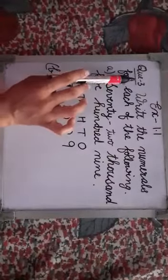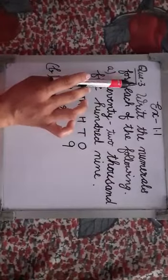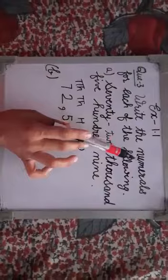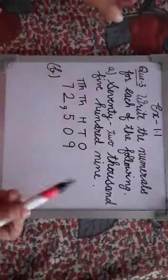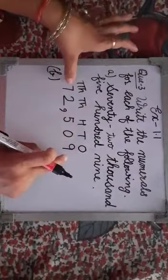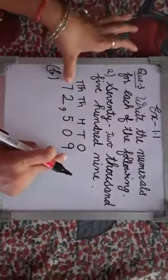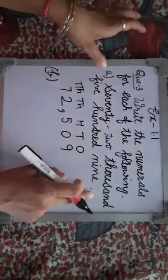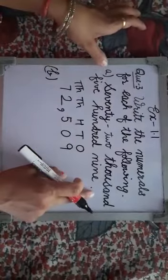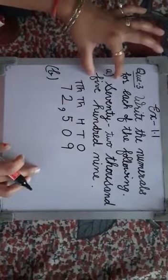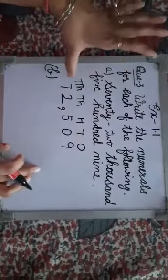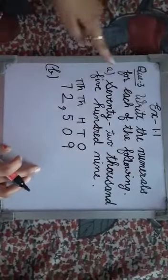Now, the question three is: write the numerals for each of the following. In the second question, we were given the numerals and then we wrote the number names. In this question, we have given the number names and in reverse we have to write the numerals for them.